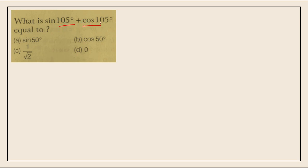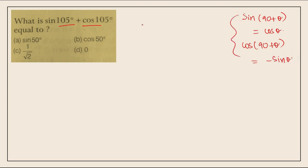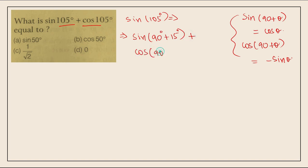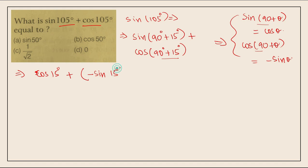Next question: What is sin105° plus cos105°? We use the formulas sin(90° plus θ) equals cosθ and cos(90° plus θ) equals minus sinθ. We write sin105° as sin(90° plus 15°), which equals cos15°. And cos105° as cos(90° plus 15°), which equals minus sin15°. So the expression becomes cos15° minus sin15°.